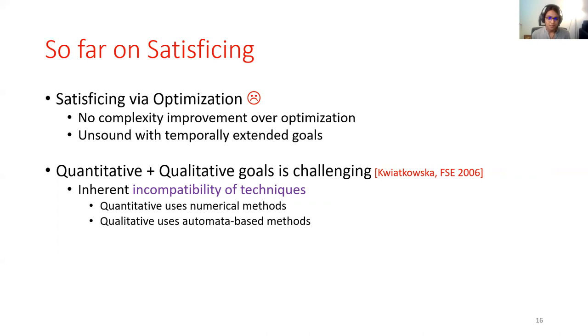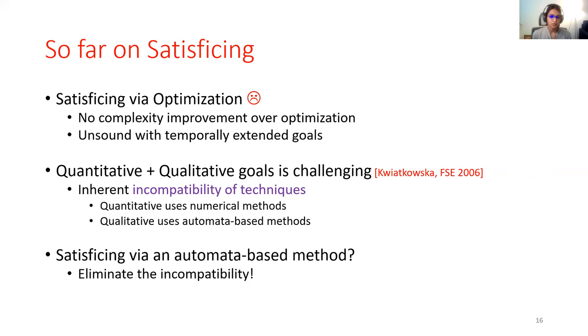Which is why in the other algorithm for satisficing that we wish to develop, our goal will be whether we can solve satisficing using automata-based methods. If we could do this, then we could eliminate the incompatibility of techniques and hopefully seamlessly combine both quantitative and qualitative goals with respect to satisficing.